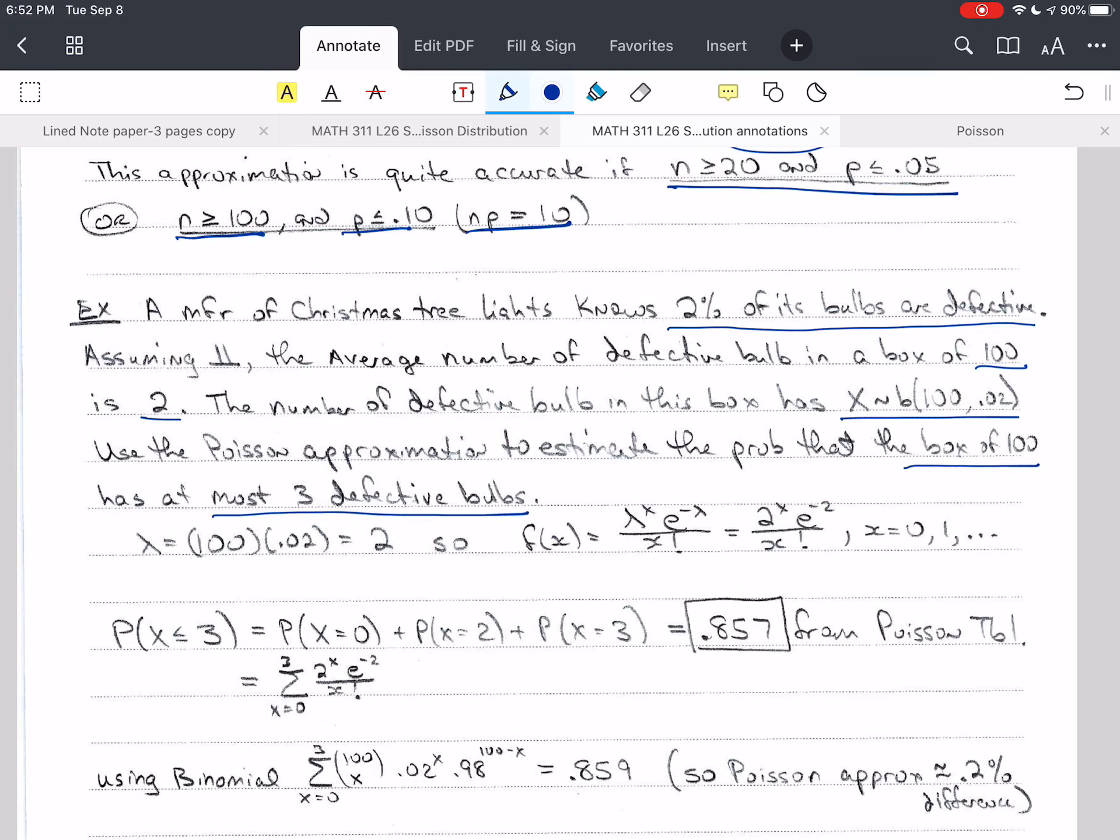So the first thing we need to do is calculate lambda, and that's going to be N P, and we get 2. And then we plug into our PMF, and we get this as our PMF, 2 to the X, E to the negative 2 over X factorial. We want the probability that X is less than or equal to 3. We could calculate these individual probabilities, but I'm not going to. We're going to go to the Poisson table.